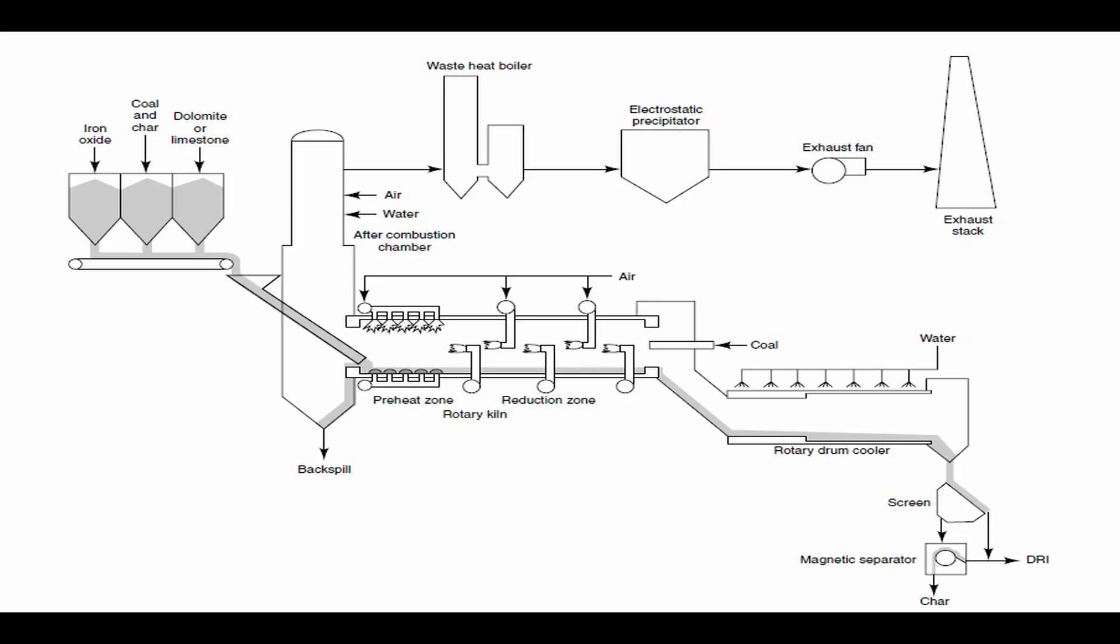The hot reduced iron and char is discharged into an indirect rotary drum cooler. The coal product is screened and magnetically separated to remove char and ash.